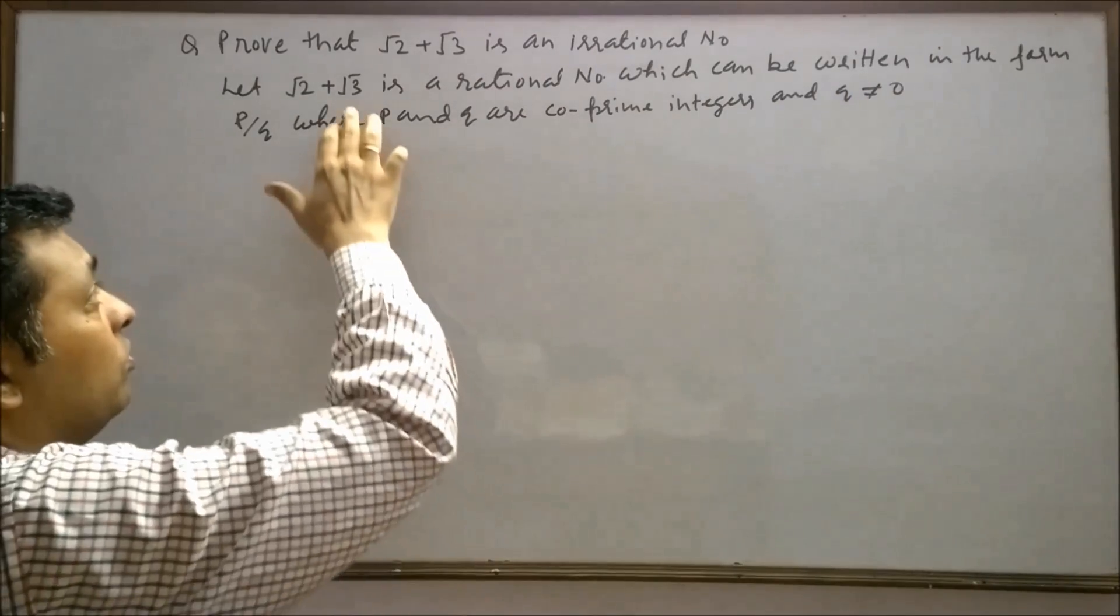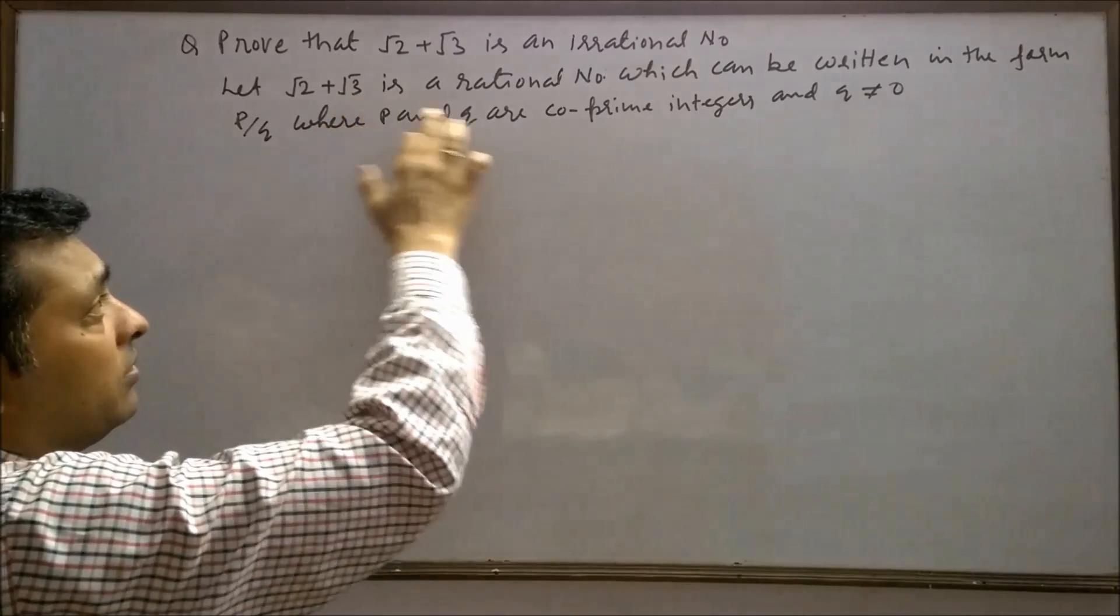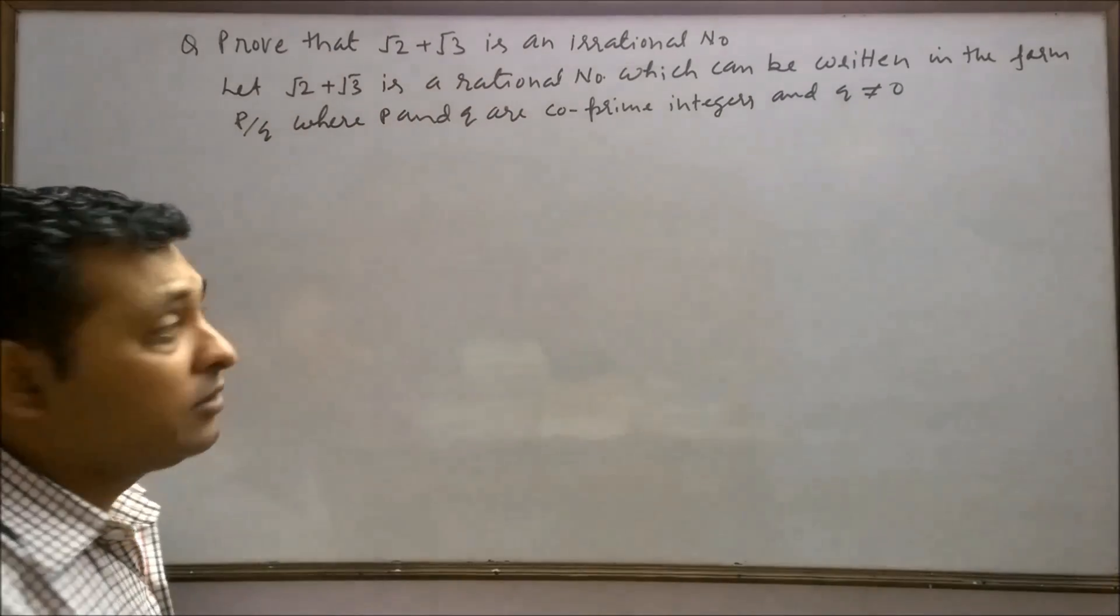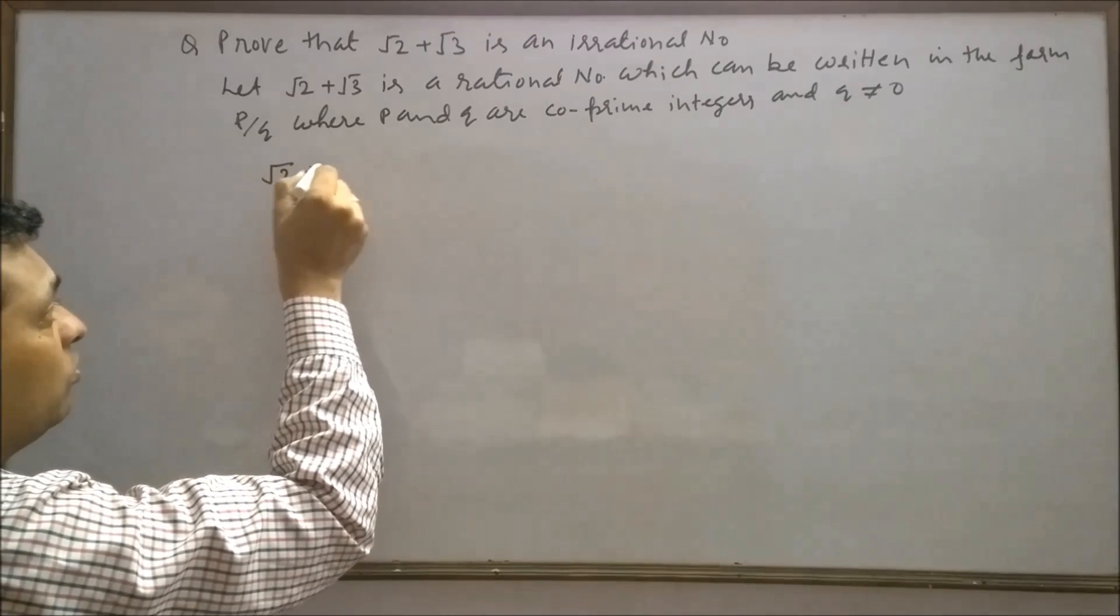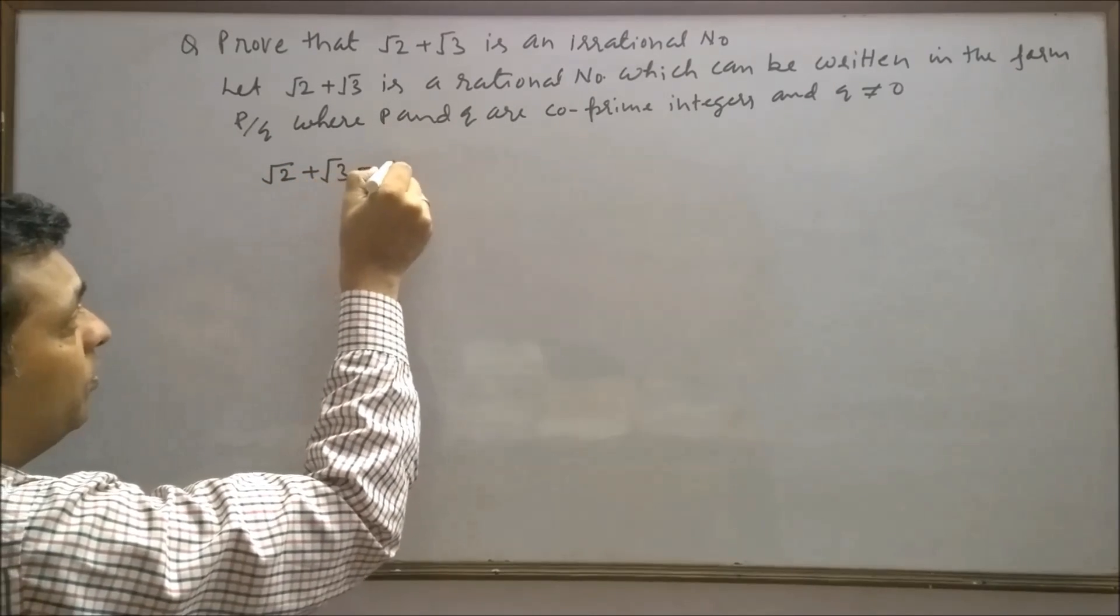So I have fitted this number in the definition of rational number. We can say root 2 plus root 3 equals p upon q.